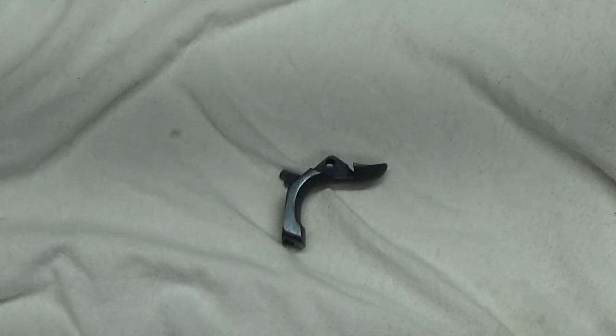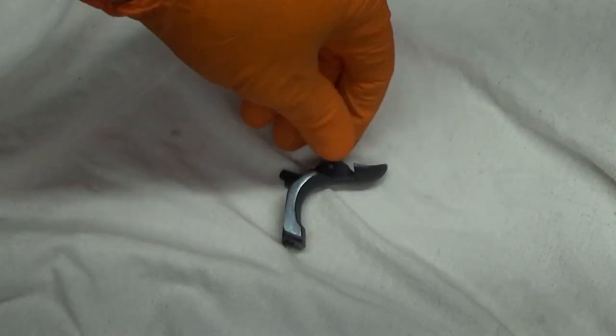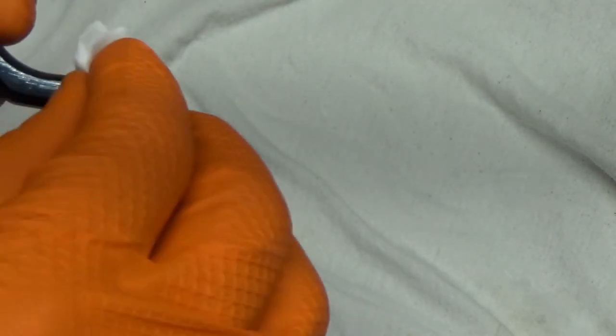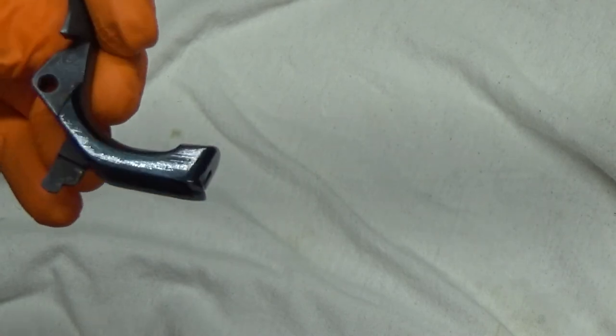Once you have a good even color, you want to take some oil and rub it on the area that's been re-blued. And then it kind of soaks in and darkens it up.